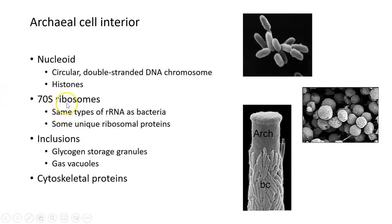Archaea have very similar ribosomes to bacteria. They use the same types of RNA to make those ribosomes. They have compartments or inclusions that can store things like sugars and glycogen, as well as gases. They have cytoskeletal proteins that help maintain their structure. Overall, the archaeal cell interior is very similar to bacterial cell interior.